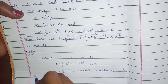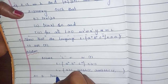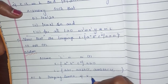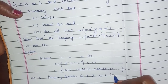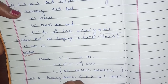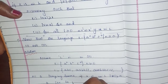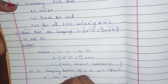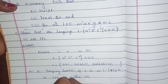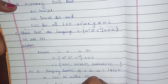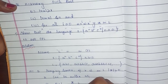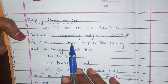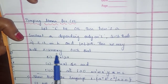According to the pumping lemma, if Z is in L and the mod of Z is greater than or equal to N, then Z can be written in a certain form. According to the pumping lemma for CFL, you have to split the language into 5 parts.